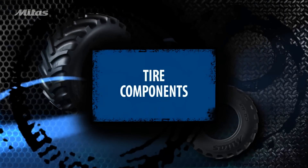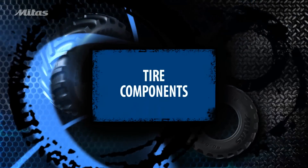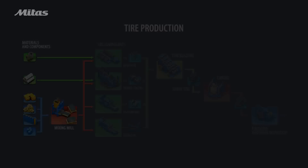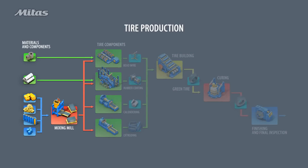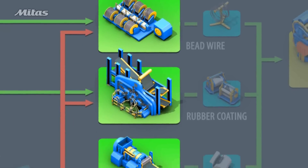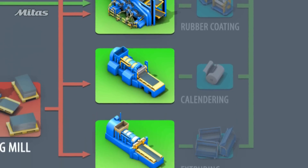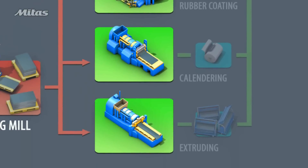Next we will show the basic components that make a tire. The components are produced during further processing. These are bead wires and rubber coated cord. Other components are extruded and calendered from various rubber compounds.